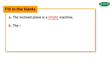Fill in the blanks. A. The inclined plane is a simple machine. B. The wheel and its axle form a simple machine.